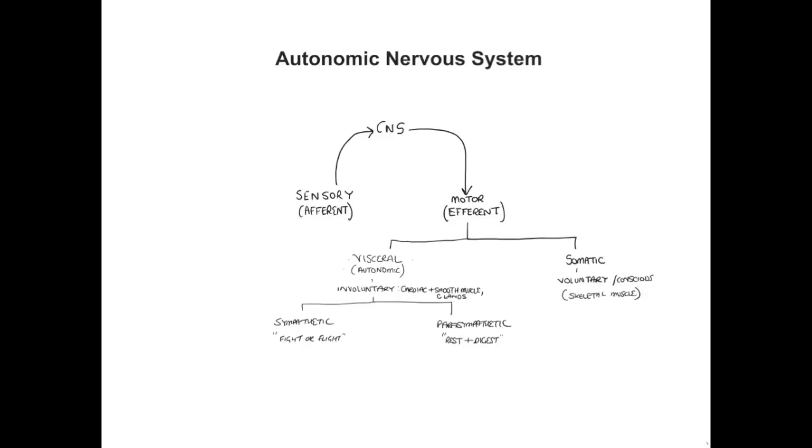If we were to look at smooth muscle in the rest of the body though, for example in the respiratory tract or the gastrointestinal tract, it is actually the parasympathetic nervous system which exerts that stimulatory control. So it is parasympathetic innervation via the vagus nerve for the most part to smooth muscle in the gut which causes peristalsis, and smooth muscle in the respiratory tract which causes bronchoconstriction.